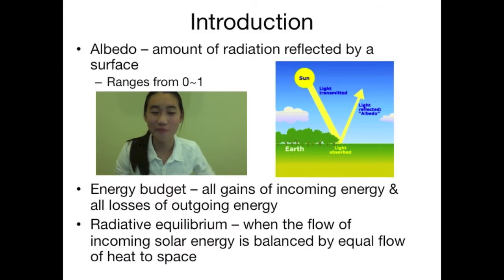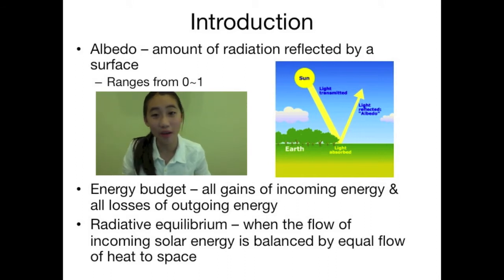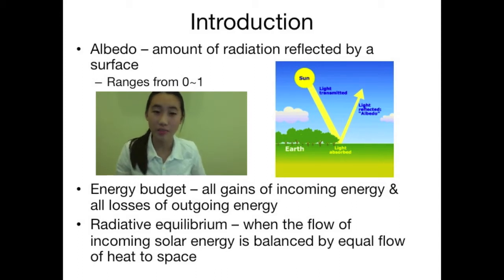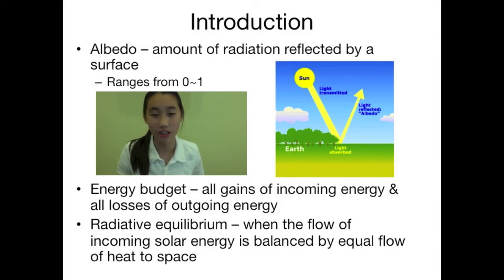Let's start off with some basic information. You might be wondering, what is albedo? Albedo is the amount of radiation reflected by a surface. This is measured by a number between 0 to 1. A value of 1 means there is 100% reflection and 0 means there is no reflection.